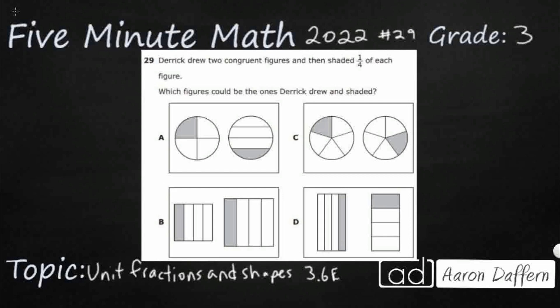So Derek is drawing two, that's an important word right there, congruent figures, and then shaded one-fourth of each. Which figures could be the ones that Derek drew and shaded? Alright, so they need to be two congruent figures. Each of them need to be one-fourth of the figure.